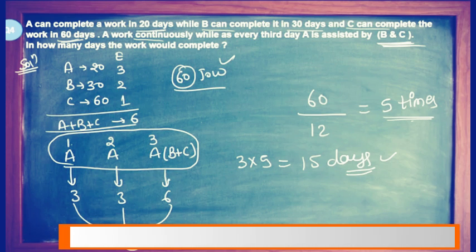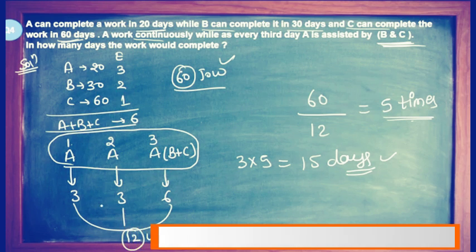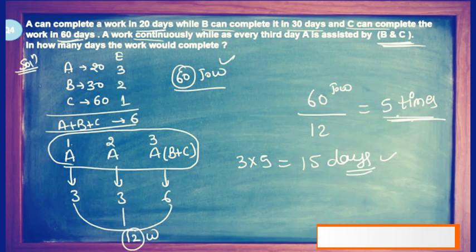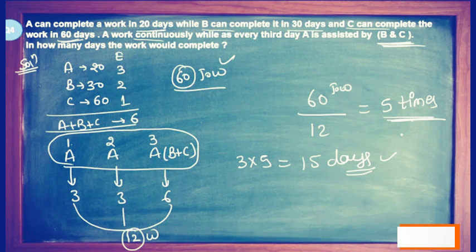We pick one cycle that is repeating. A has 3 units for 3 efficiency, then 3 more, then A plus B plus C gives 6 on the third day. Adding 3 + 3 + 6 = 12 work efficiency per cycle. Dividing total work 60 by 12 gives 5 times, and 5 × 3 = 15 days to complete the work.